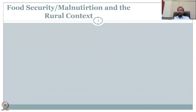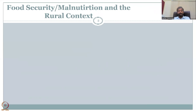In the last lectures, we looked at water security and how it is tied to rural development. Another very important topic is food security and malnutrition in the rural context. Food security doesn't only mean are we producing enough food, but is it also going to reach the vulnerable people — and in this case, the most vulnerable are the rural population. Sometimes it is sad to understand that those who produce the food cannot afford to consume it.